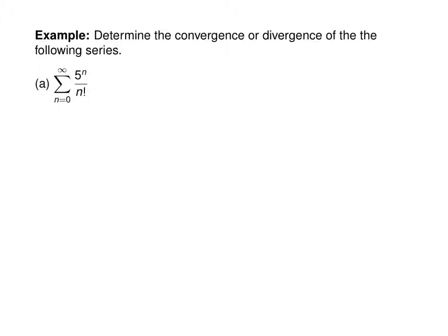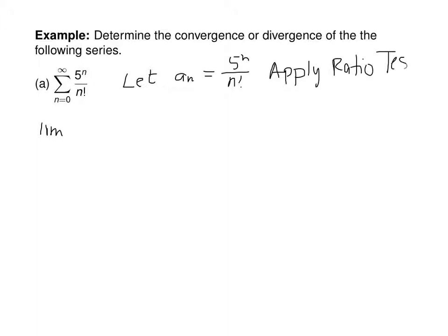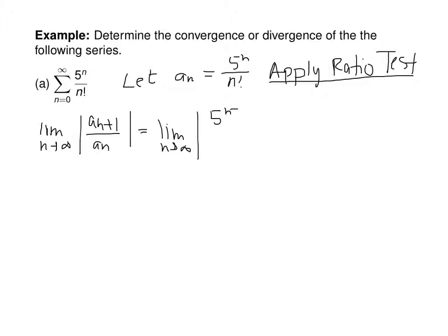The ratio test works really well for series involving factorials and powers. Let's let a_sub_n equal 5^n over n factorial and apply the ratio test. We'll find the limit as n goes to infinity of a_sub_(n+1) over a_sub_n. Inputting n+1, we have 5^(n+1) over (n+1)! times n! over 5^n. Now 5^(n+1) is 5^n times 5, and (n+1)! is (n+1) times n!.